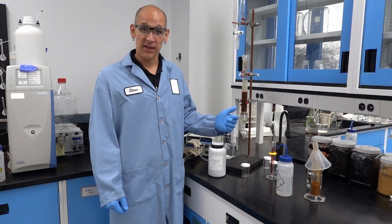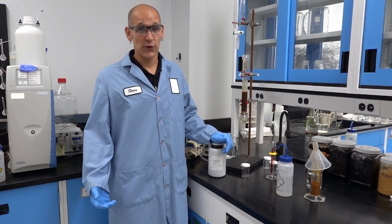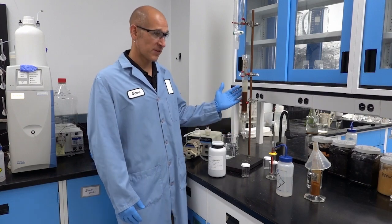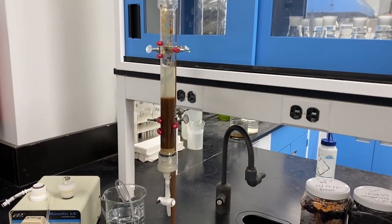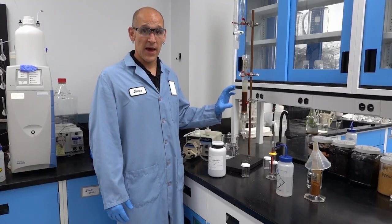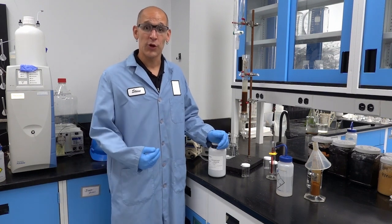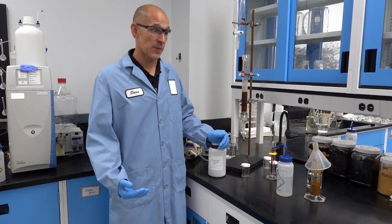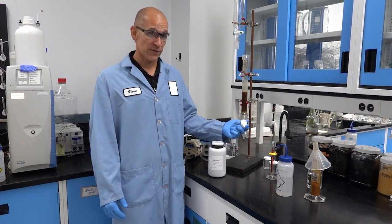So those are the basic steps for running a laboratory scale evaluation of ion exchange resin. To review, you want to make sure you have the proper equipment set up. When you load the resin in your column, you load it in a manner to avoid air pockets. During your experiment, you keep a consistent flow and you monitor that flow throughout the experiment. You collect representative samples so you can track the performance of the resin.